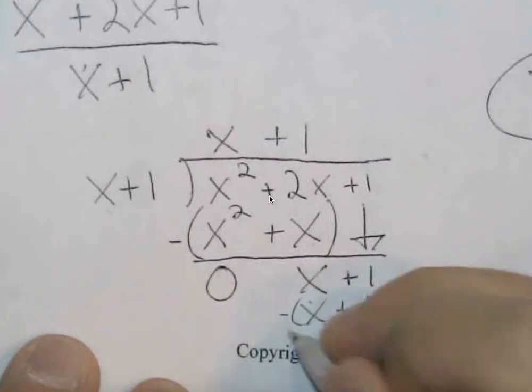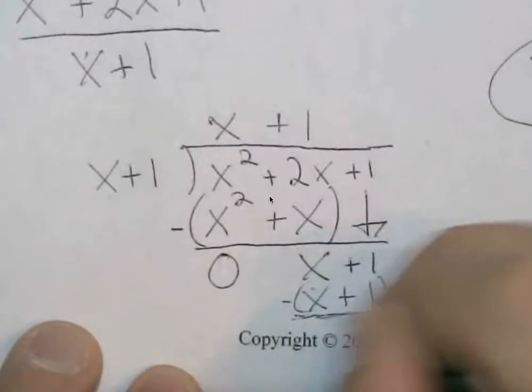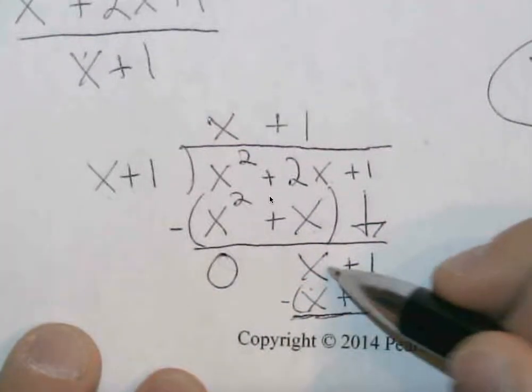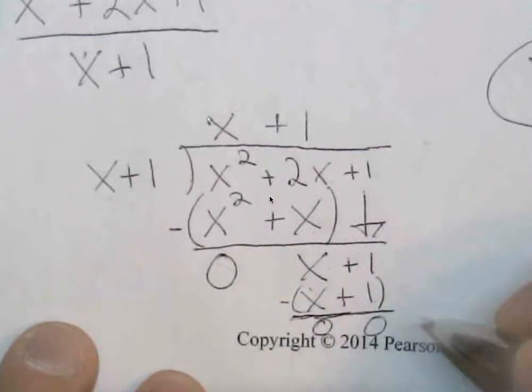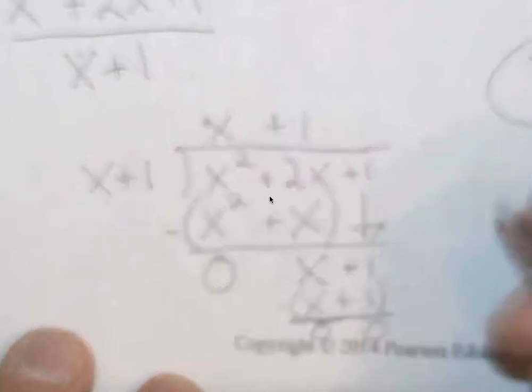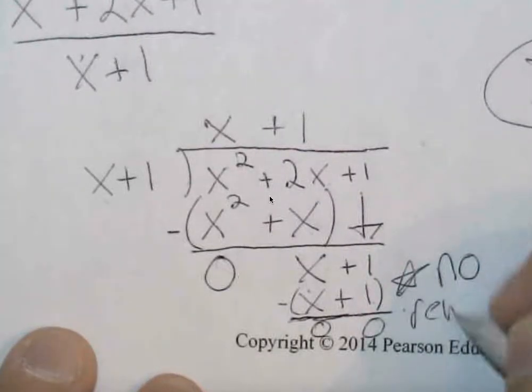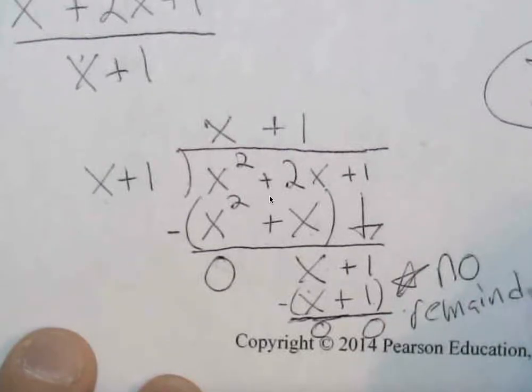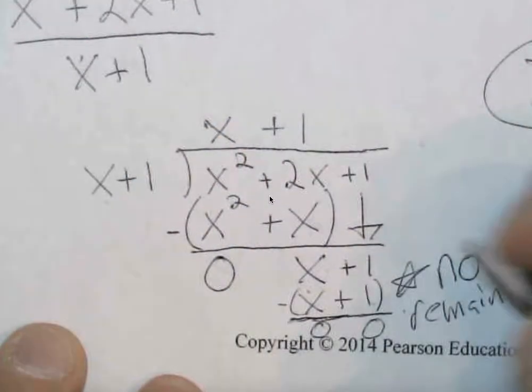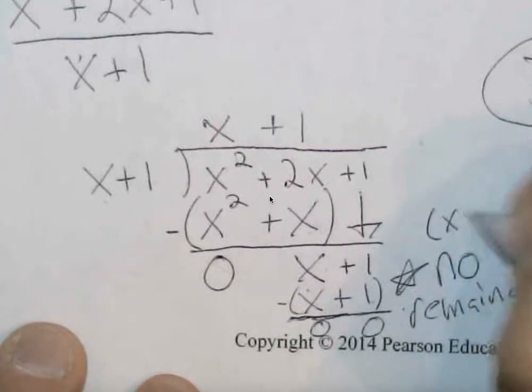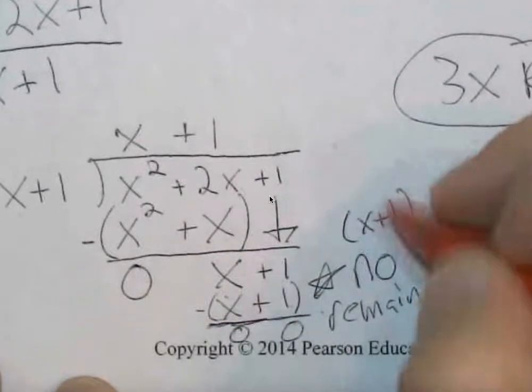See an interesting phenomenon here where these are all going to cancel. If you look at this closely, x minus x gets you 0. 1 minus 1 gets you 0. So we luckily have a remainder of nothing. For this one, there's actually no remainder. The final thing we would want to say is our answer is x plus 1.